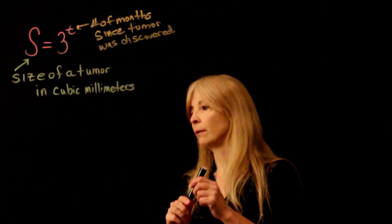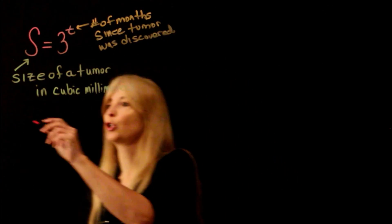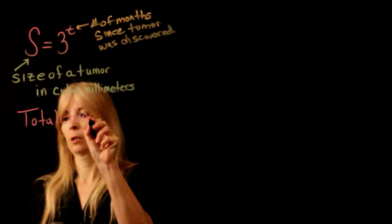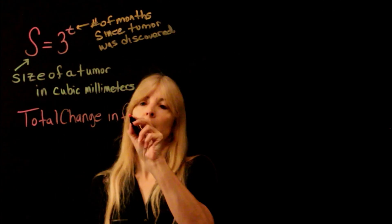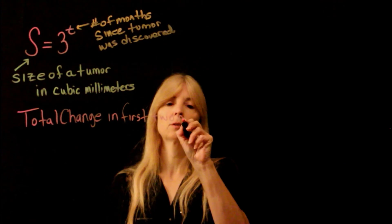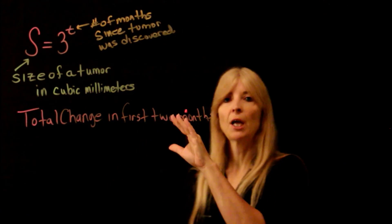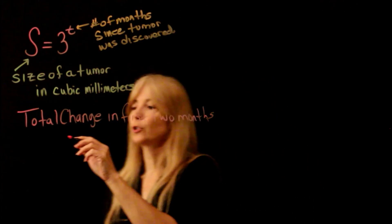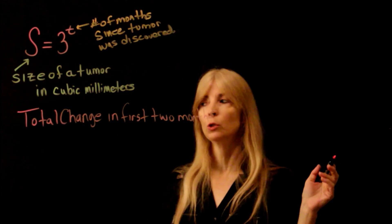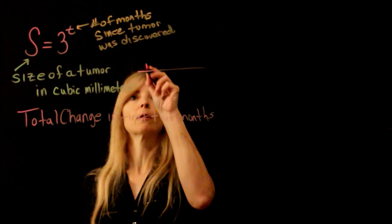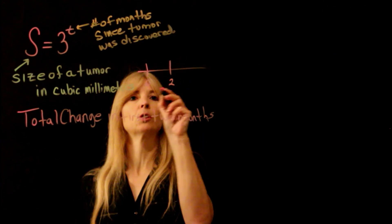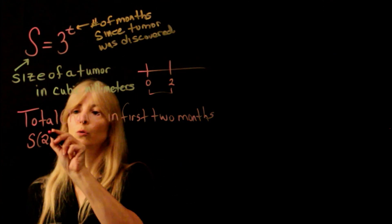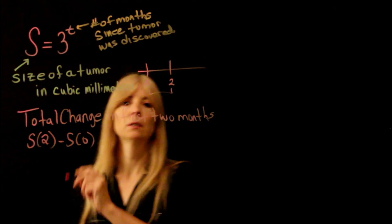The first thing it asks us to find is the total change in the first two months. So the total change would be the total growth or the total size. The first two months would be from 0 to 2, or as we always say when we're on a graph, if we're going from 0 to 2, how do you find that distance? 2 minus 0. So in other words, S of 2 minus S of 0.